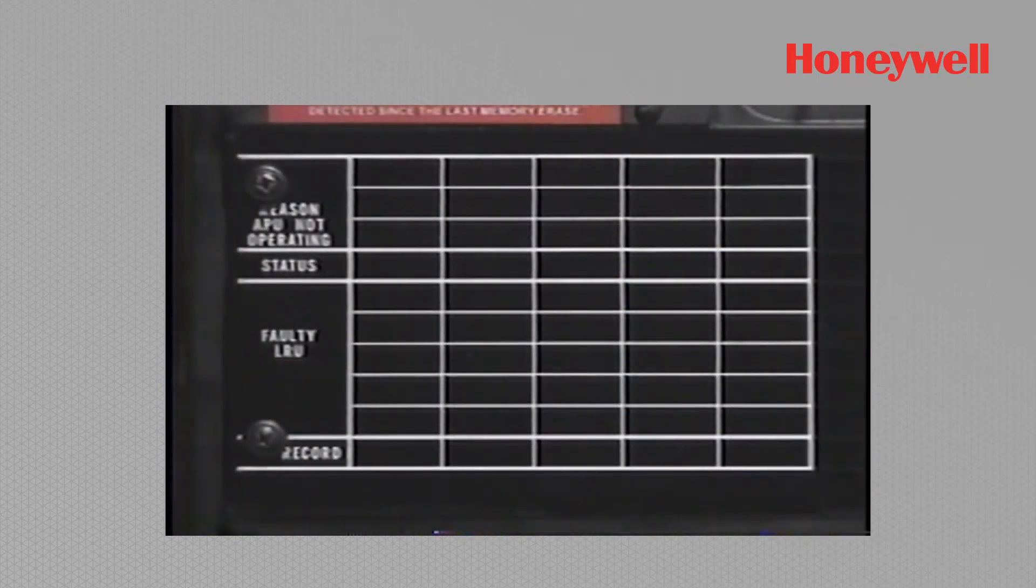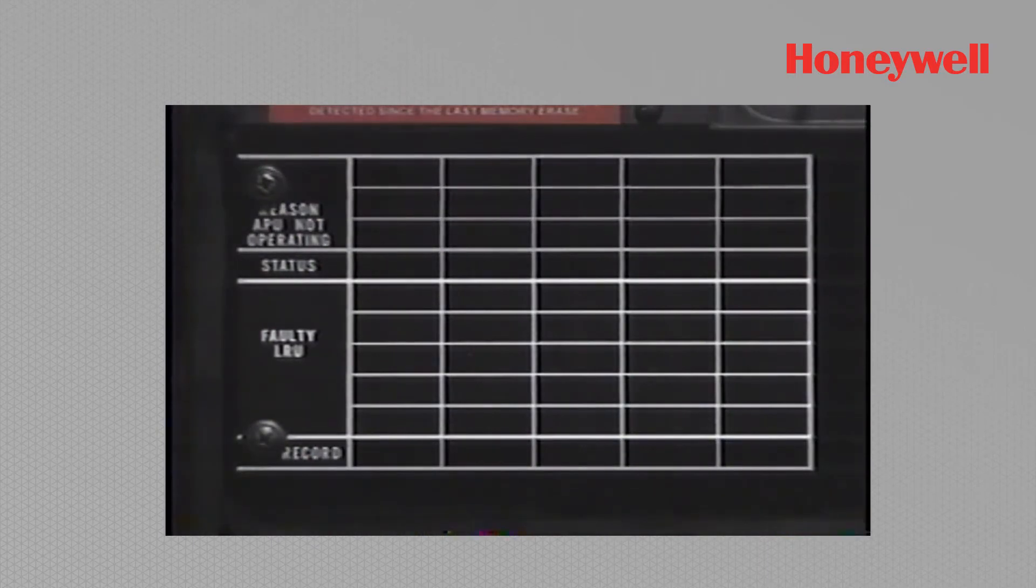As mentioned, one of the main features of the new Dash 19 ECU is being able to interrogate its history while the APU is running.